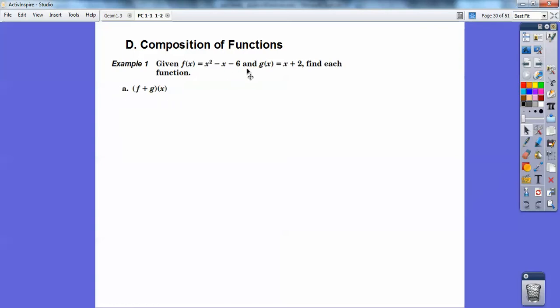So first we want to just add them together, f plus g of x. So just add x squared minus x minus 6 with x plus 2. And then that's going to come out to x squared minus 4.